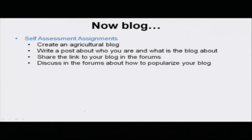This is enough knowledge for you to go ahead and start your own blog. There is a self-assessment assignment: create your own blog on agriculture — a genre-specific agricultural blog. Write a post about who you are and what your blog is about. Share the blog address on the forums at agmoocs.in, discuss how you are going to popularize your blog, and read the blogs of other people. If you engage in these four steps in the coming days, you will get a good hang of blogging and become a very good blogger. Happy blogging and thank you.